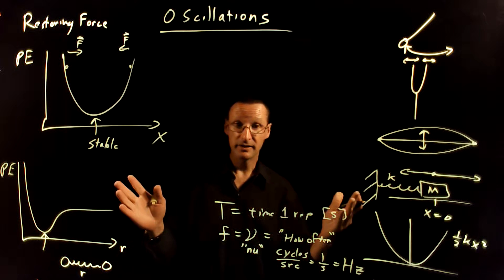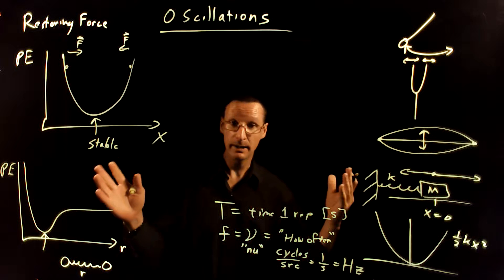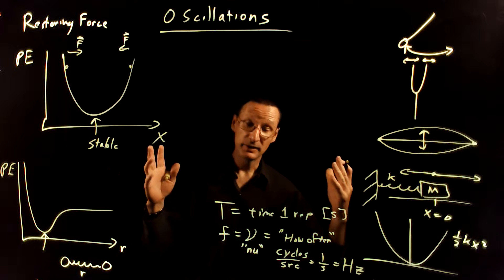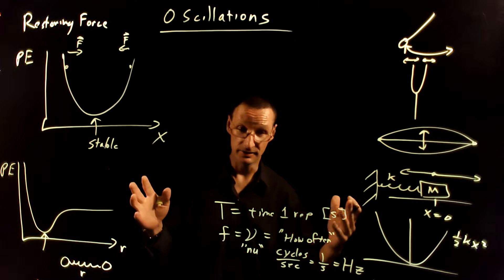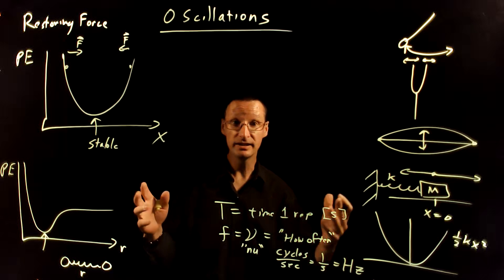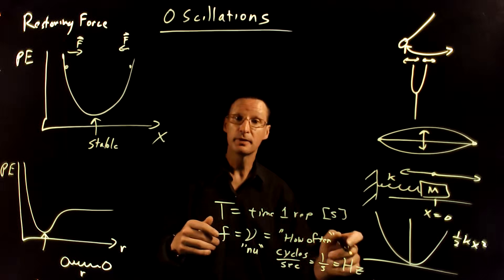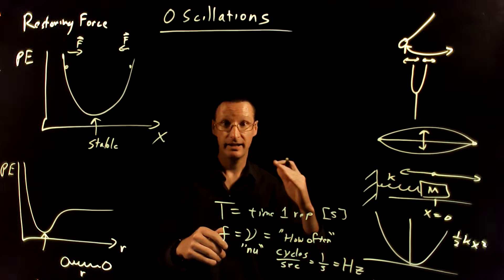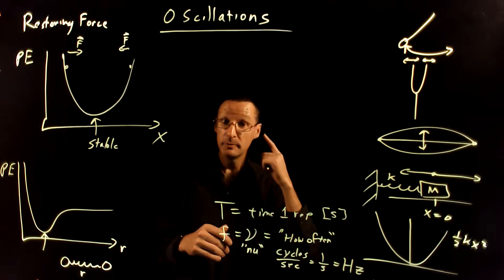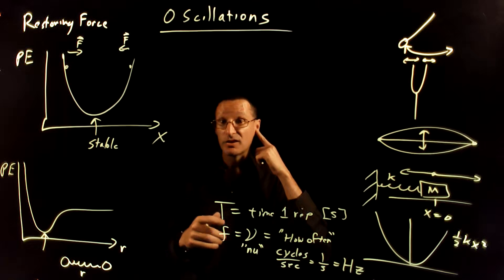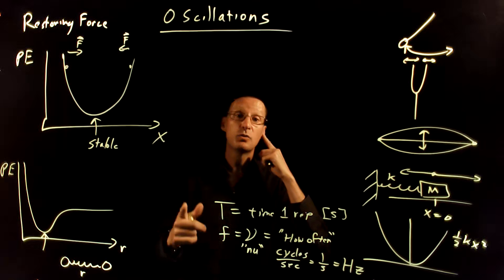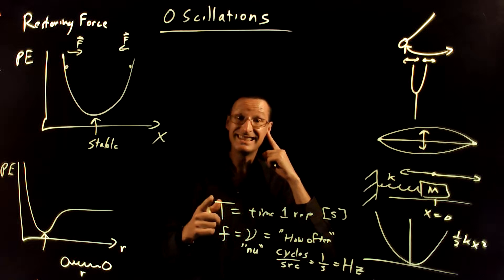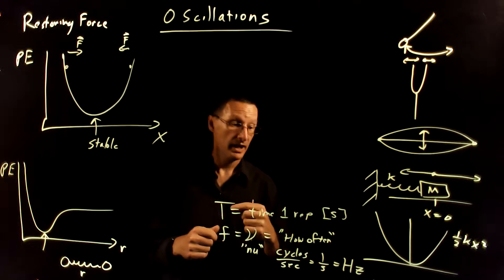Like radio stations will be advertised at 99.7. The 99.7 is 99.7 megahertz or 99.7 million cycles per second that radio waves are oscillating. Human hearing goes from about 20 Hertz to 20,000 Hertz or 20 kilohertz.